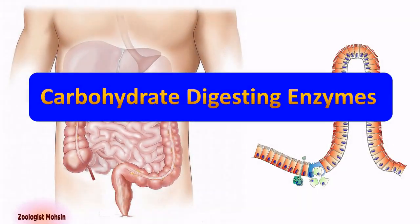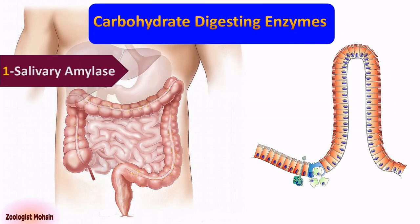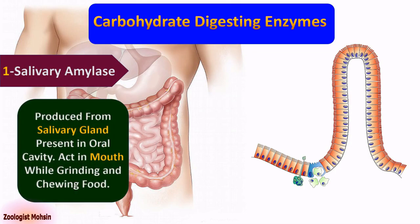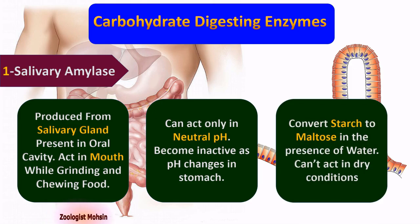Carbohydrate-digesting enzymes. Number one: salivary amylase. Salivary amylase is produced from the salivary gland present in the oral cavity and acts in the mouth while grinding and chewing food. Salivary amylase can act only in neutral pH, that is 7, and becomes inactive as pH changes in the stomach. It converts starch to maltose, which is a disaccharide, in the presence of water, and cannot act in dry conditions.